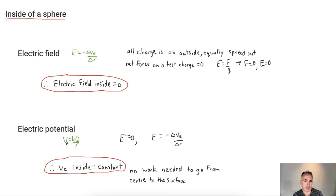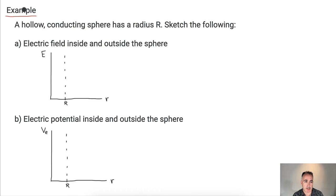Let's see if we can put these into context. Let's do an example. We have a hollow conducting sphere with radius R. From zero to R here is the center, and this is the outside. Sketch the following: the electric field inside and outside the sphere, and the electric potential inside and outside. We can just use the information we just learned.